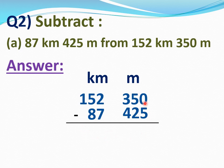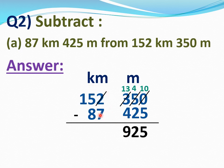Now subtract this. This 0 is smaller than 5, so we will borrow from the next number. This 5 will become 4 and this 0 will become 10. 10 minus 5 is 5. 4 minus 2 is 2. This 3 is smaller than 4, so we will borrow. This 2 will become 1 and this 3 will become 13. 13 minus 4 is 9. This 1 is smaller than 7, so we borrow. This 5 will become 4 and this 1 will become 11. 11 minus 7 is 4. This 4 is more than 8, so borrow. This 1 will become 0 and this 4 will become 14. 14 minus 8 is 6. 0 as it is. Answer is 64 kilometers 925 meters.